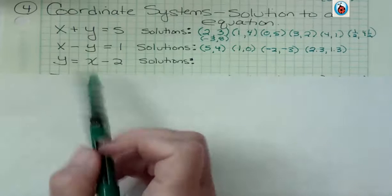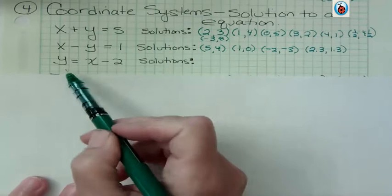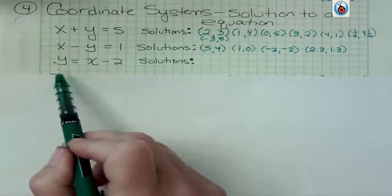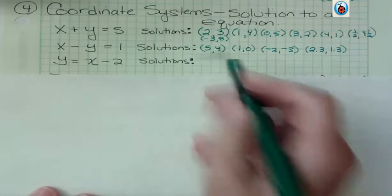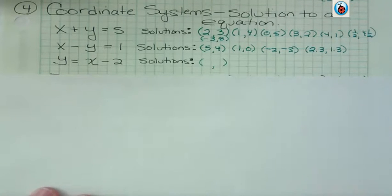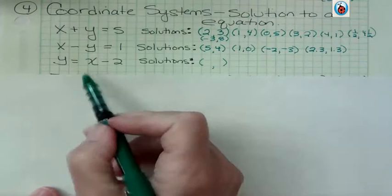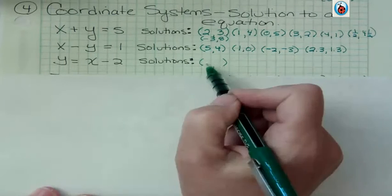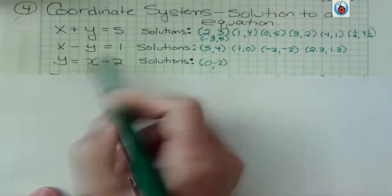Okay, one more. What if they were rearranged differently and we were looking for a solution? Can you think of a solution that would make this true as an ordered pair? Well, if x was 0, y would be negative 2, because 0 minus 2.